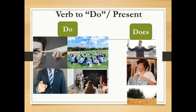الضمائر تنقسم مجموعتين: مجموعة مع do وهي التي تضم I, you, we, they؛ ومجموعة مع does وهي he, she, it.